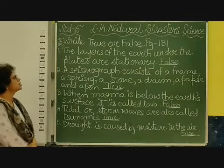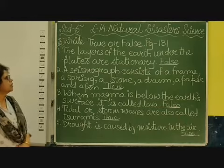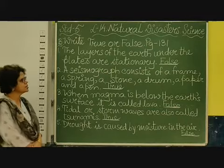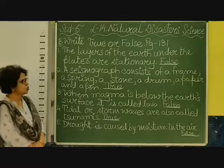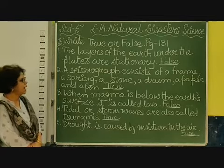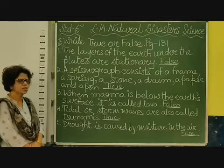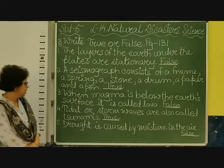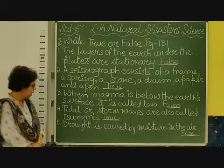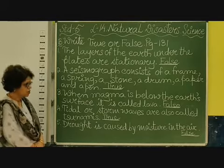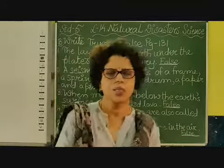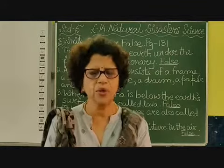So children, here is the summary. The layers of the earth under the plates are stationary — false. A seismograph consists of a frame, a spring, a stone, a drum, a paper and a pen — true. When magma is below the earth's surface, it is called lava — false. Tidal or storm waves are called tsunamis — true. Drought is caused by the moisture in the air — false. Write true or false in your textbook. Thank you.